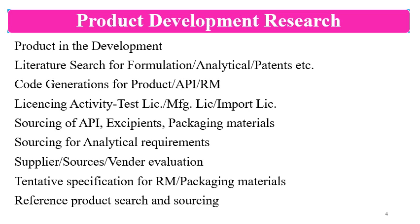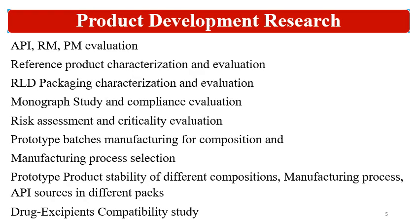For example, if the product is for the US market, then the US reference product is needed; for Europe or other ICH regions or Brazil, the respective reference product is sourced depending on the market. After that, API raw material evaluation happens, followed by reference product characterization and evaluation. Based on that, change parts and tooling for prototype product development can be procured. R&D packaging characterization is done to gather information on packaging requirements. Then pharmacopoeial monograph study and compliance evaluation are conducted — if monographs are not available, in-house methods are required to be developed.